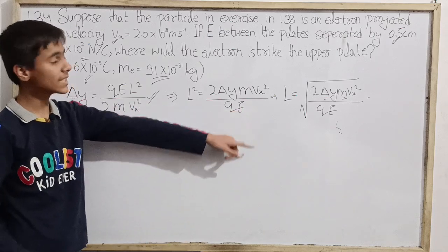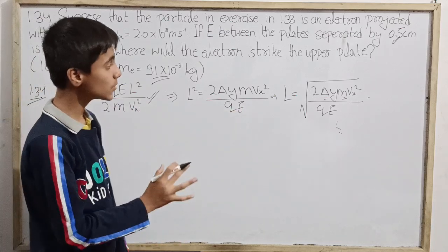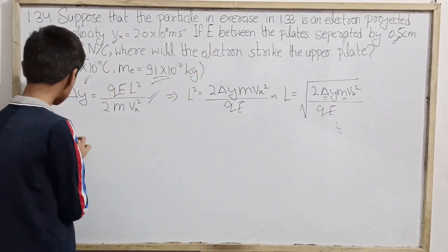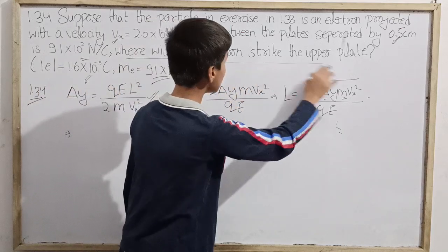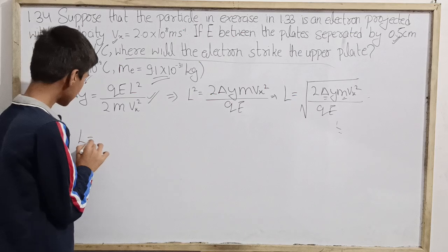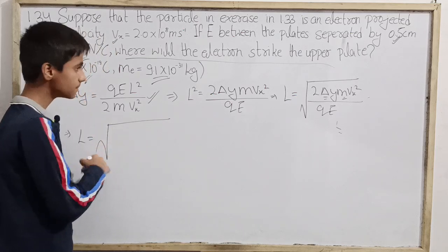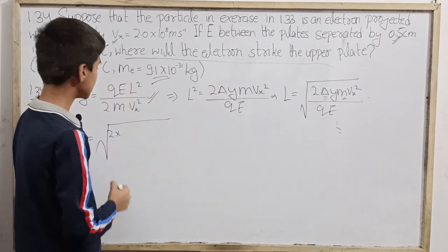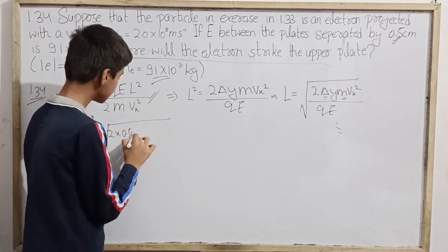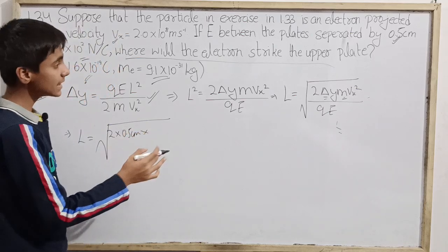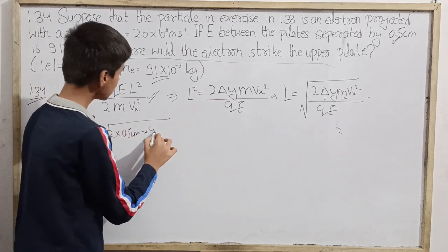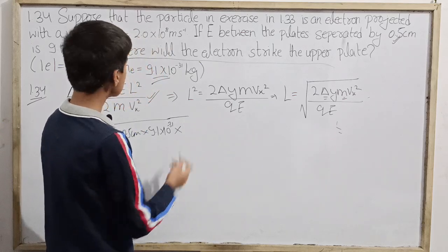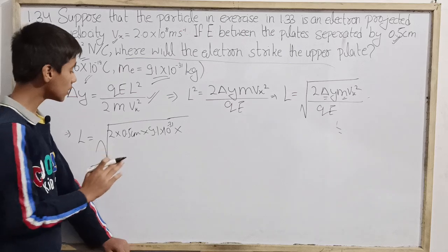l is the horizontal position which it will cover during the time interval in which it strikes the upper plate, and that is what we have to find out. We can simply put in all the values: square root of 2 times delta_y, so delta_y is 0.5 cm, into the mass of electron 9.1 times 10^-31 kilogram, and into vx^2.